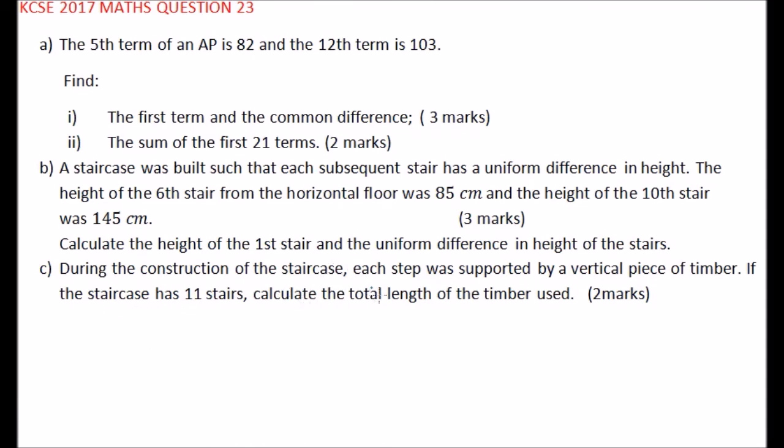During the construction of the staircase, each stair was supported by a vertical piece of timber. If the staircase has 11 stairs, calculate the total length of the timber used. We have 11 stairs, and we found that the common difference, which is the height, was 15 centimeters. This means the height of the timber used will be, because we have 11 and each timber was 15 centimeters, we multiply 11 times 15 and you get 165 centimeters. This is the total length of the timber that was used in the construction of the stairs.